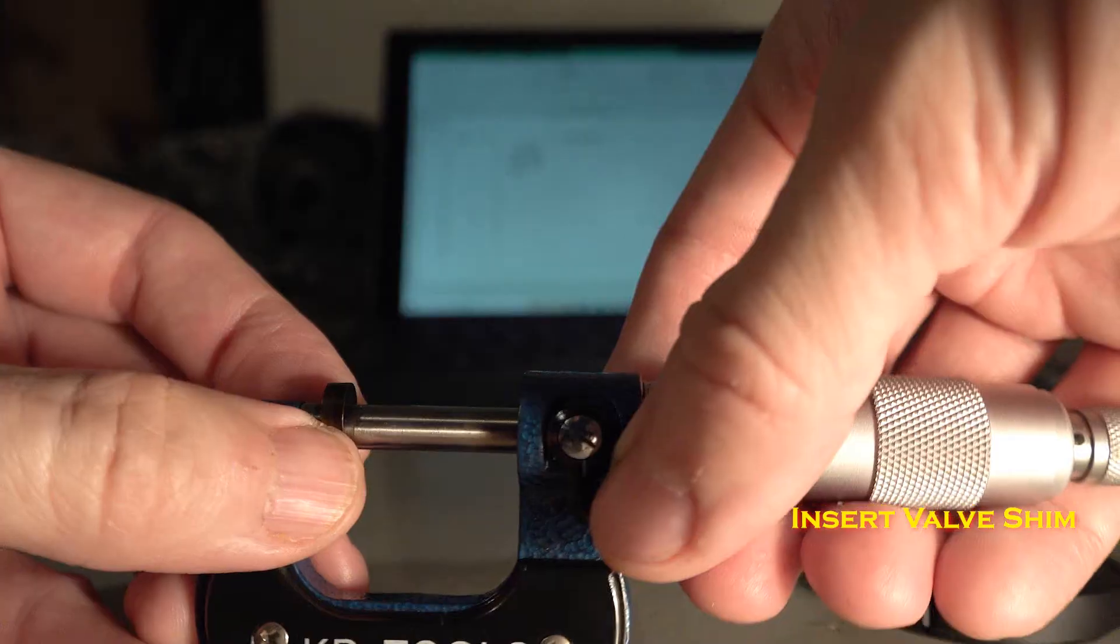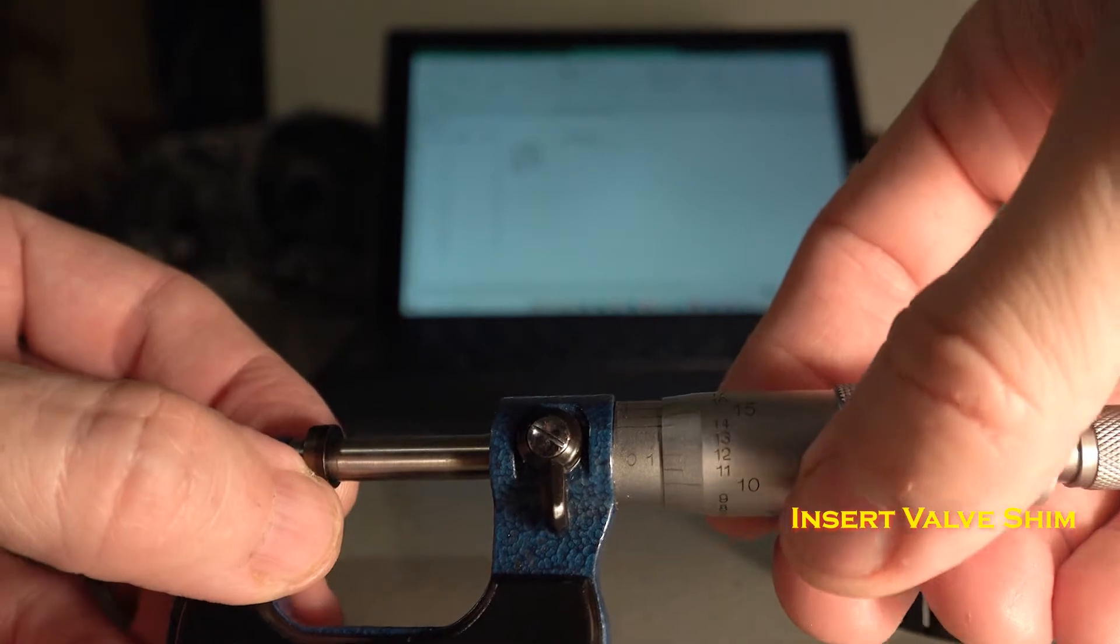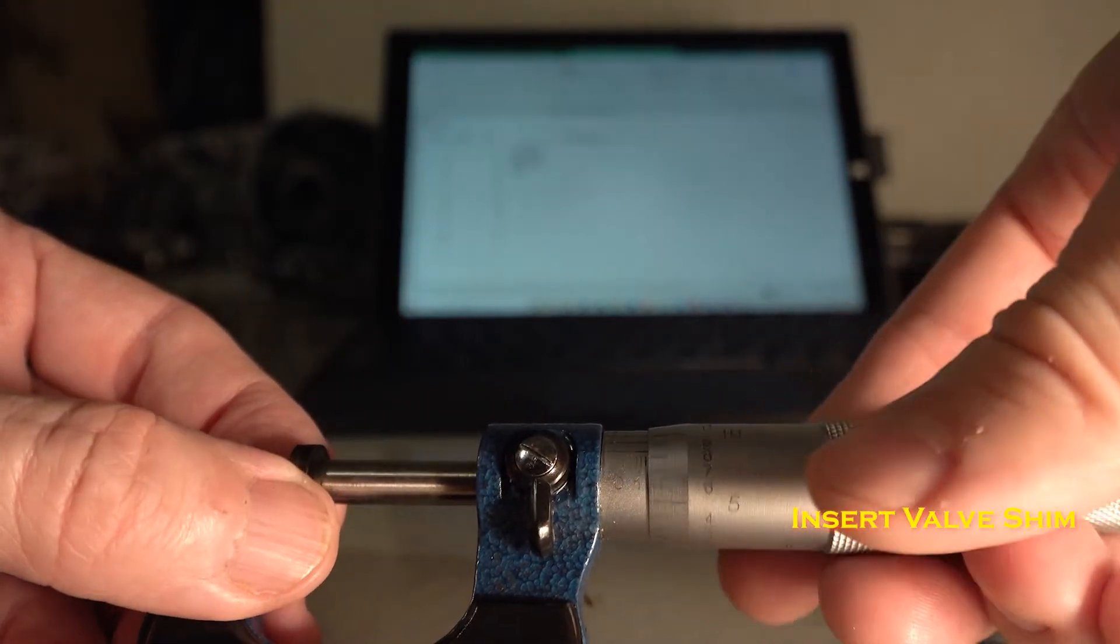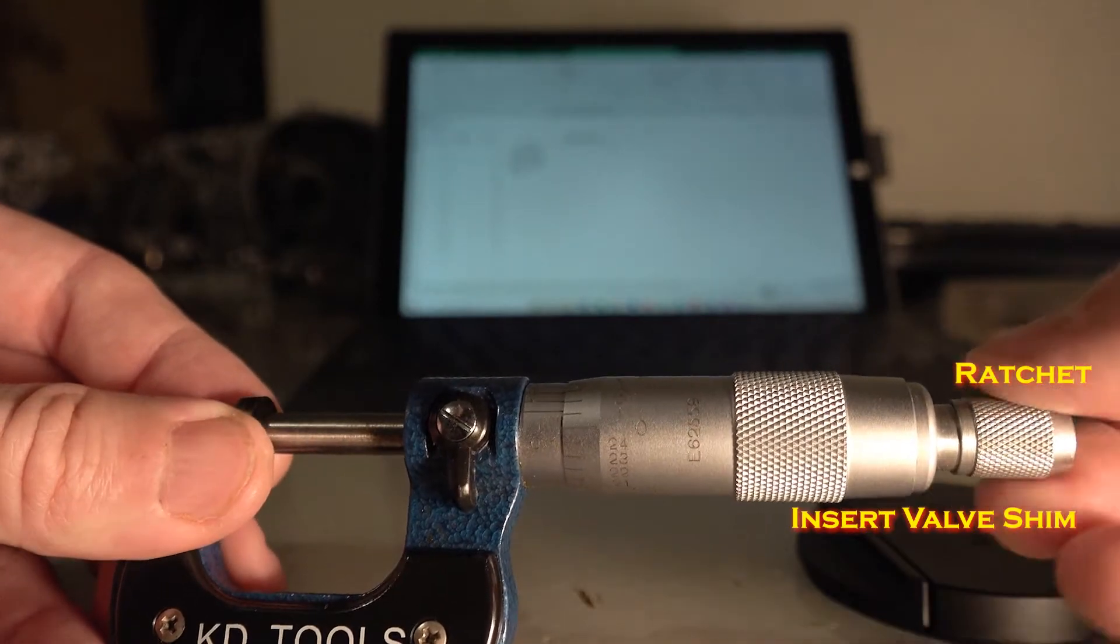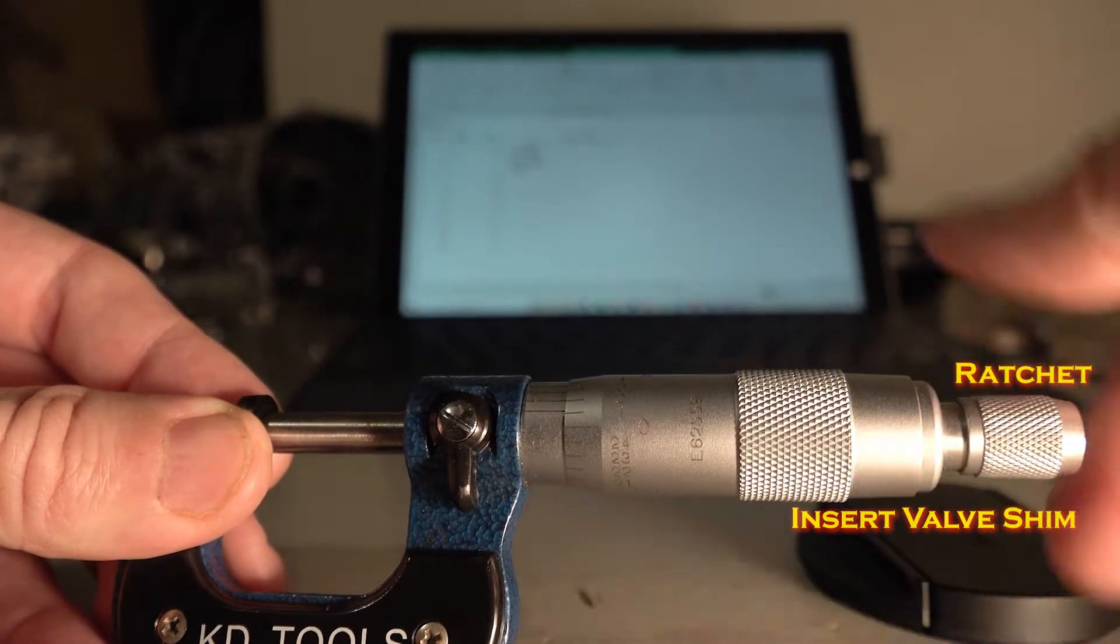We give it a little bit of space to insert our valve shim. Now that the valve shim is in place, I'm going to turn it pretty close, and when there's almost no play left, I'm going to rotate the ratchet, and that's going to be the final spot.